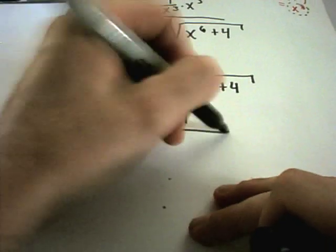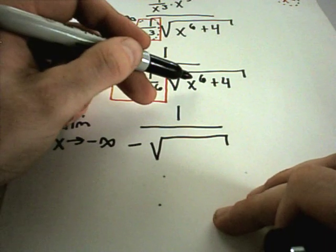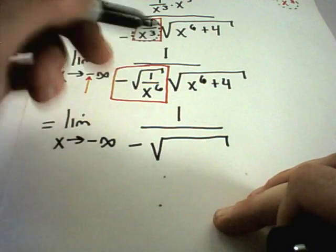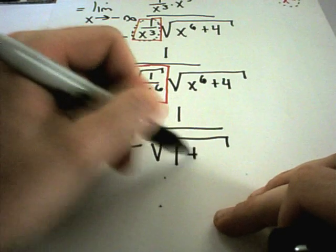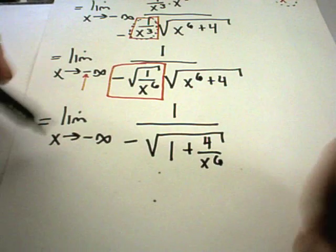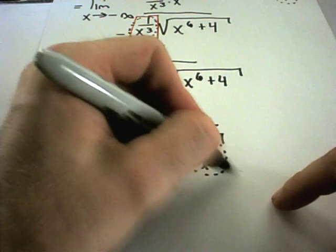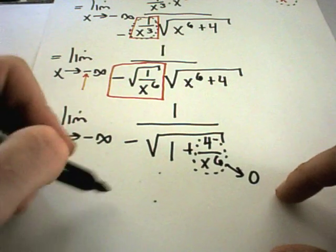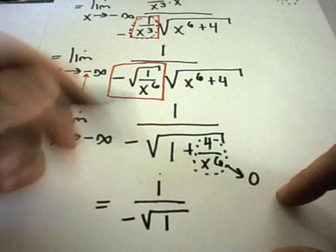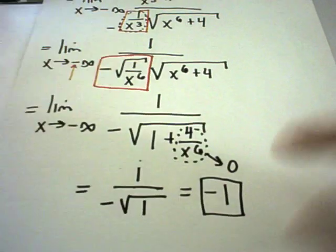You've got 1. My negative is going to hang out front. If I distribute 1 over x to the sixth times x to the sixth, I'll get x to the sixth over x to the sixth, which is 1. Then I'll have 4 over x to the sixth. And as x goes to negative infinity, just like before, 4 over x to the sixth is going to become 0. I'm left with 1 over negative square root of 1. And my solution will turn out to be negative 1 in this case.